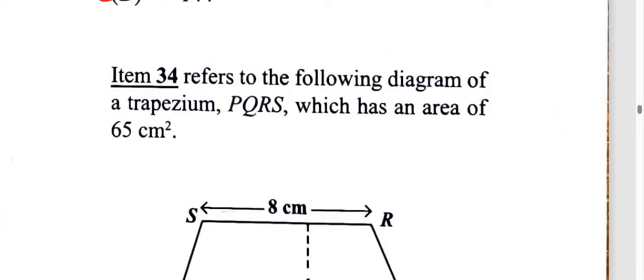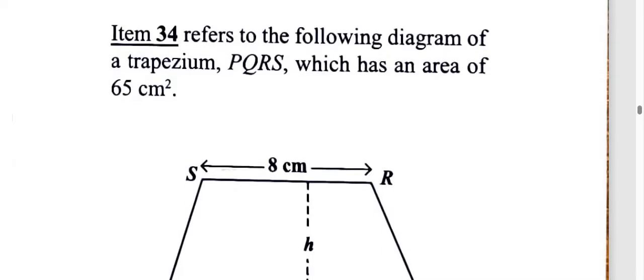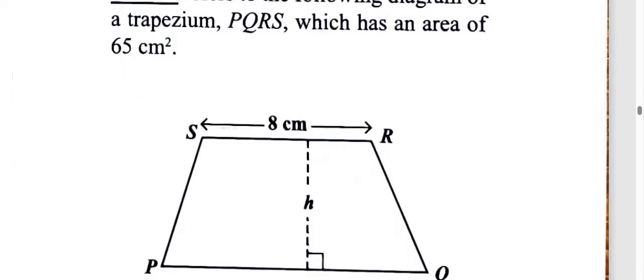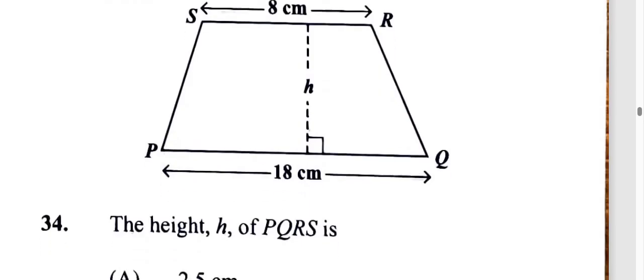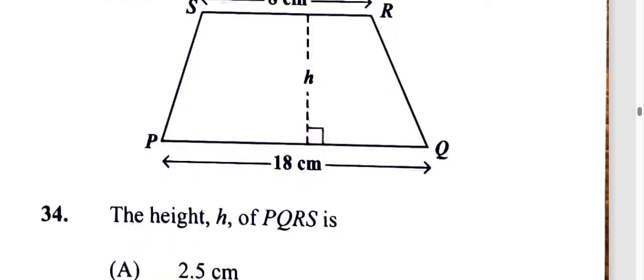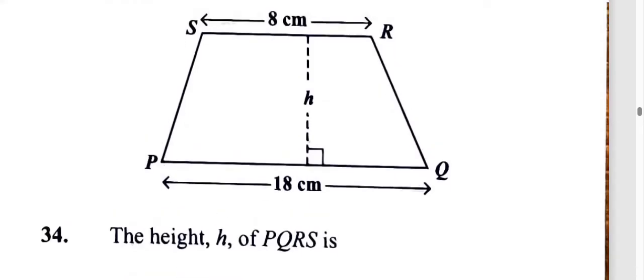All right, for this question 34, we have a trapezium, and the area is 65 square centimeters, and we're asked to find the height. Okay, so let's put this in perspective. So we know the area of a trapezium is half times the sum of the parallel sides.